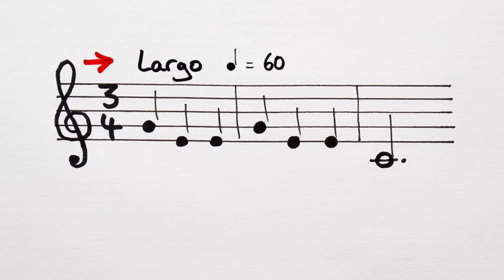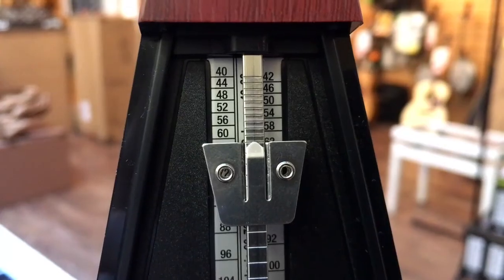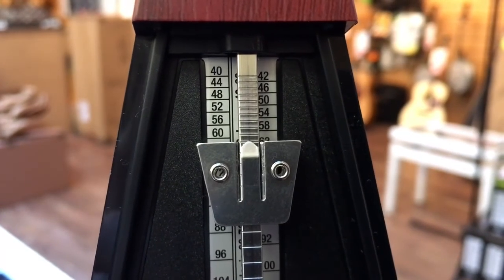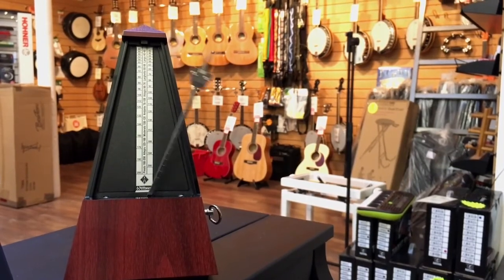Or, in other words, the tempo of the piece is given by a metronome, set ticking at 60 beats per minute. One tick per crotchet.